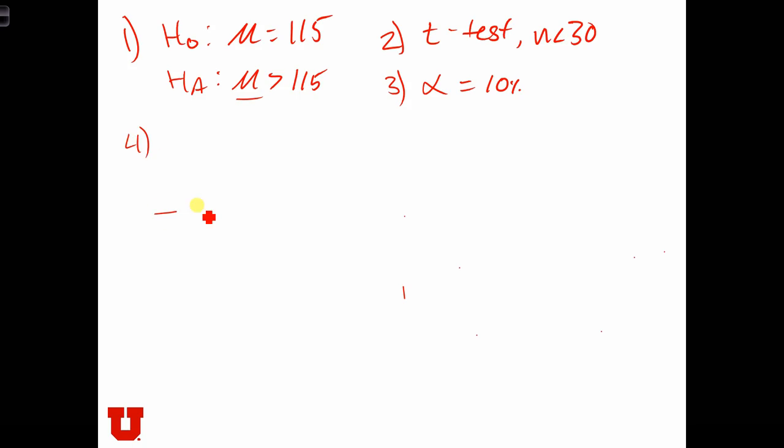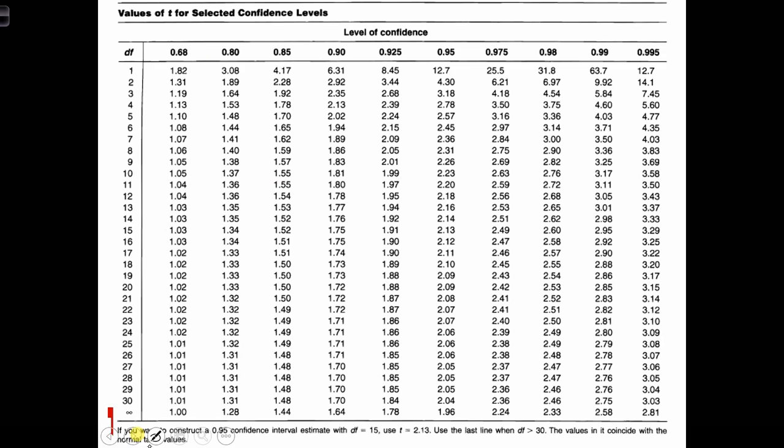Four, let's draw it out. So it's a right-tailed test. The critical value is going to be such that there's 10% to the right. That means we have to use the 80% level of confidence, because that's going to put 10% on each side.